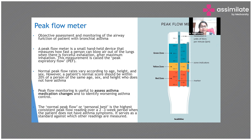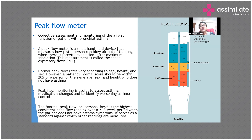The 'personal best' is the highest consistent peak flow reading over a two-to-three week period when the patient has no asthma symptoms. When you give a patient a peak flow meter, tell them to measure when they are at their best — even asthma patients have symptom-free days. That personal best becomes the standard against which all future readings are compared.